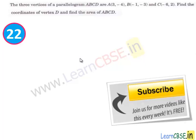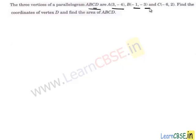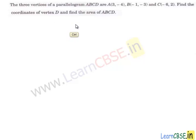In this question, we are given three vertices of a parallelogram ABCD. Their coordinates are A(3, −4), B(−1, −3), and C(−6, 2). We have to find the coordinates of vertex D and the area of parallelogram ABCD.